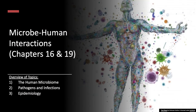We've got three major topics: the human microbiome, and pathogens and infections. These two topics are going to be covered in chapter 16 in your book. And the epidemiology portion of this lecture, which includes transmission of infectious diseases and some common epidemiological terms, will be found in chapter 19 of your book.